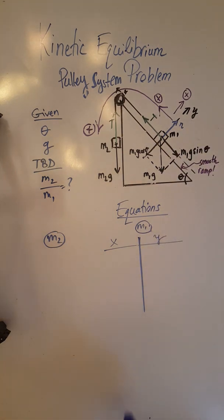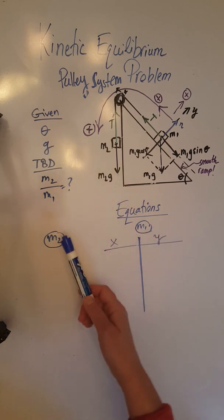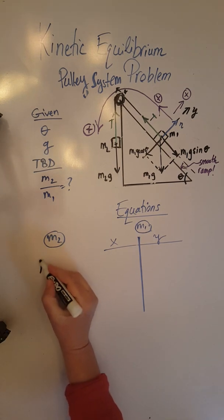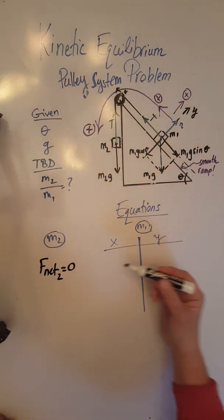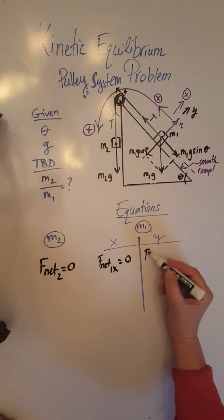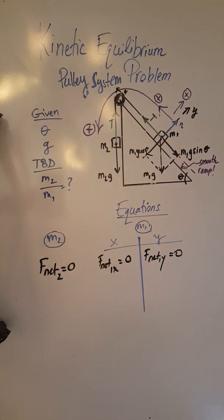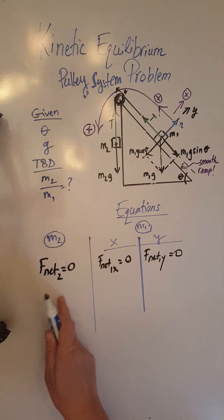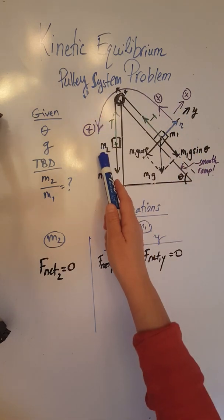We now move on to the equations. We have two sets: one for M2 and another set of x and y equations for M1. M2 only has forces going in one direction, so F_net2 equals 0. M1 has forces in the x direction so F_net1x equals 0, and forces in the y direction so F_net1y equals 0. For M2, the positive direction is downward, as dictated by the way the system moves.